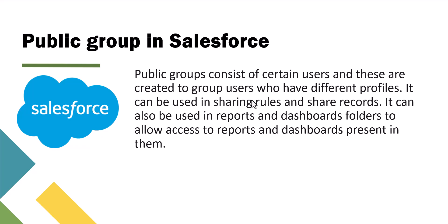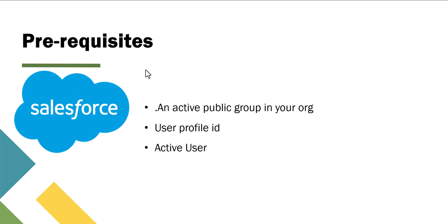For this scenario, we have a public group named 'Sales Group.' In the record trigger flow we will define the condition such that when a new user is created with the profile ID 'Sales Team,' the user will be assigned to the public group named 'Sales Group.' The prerequisites are: you should have an active public group in your org, you need the user profile ID, and the user must be active.